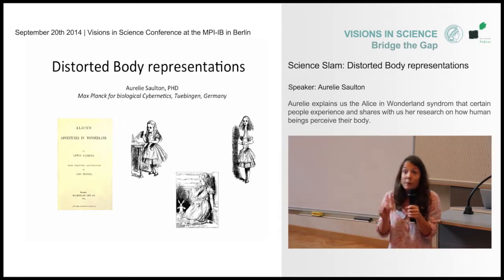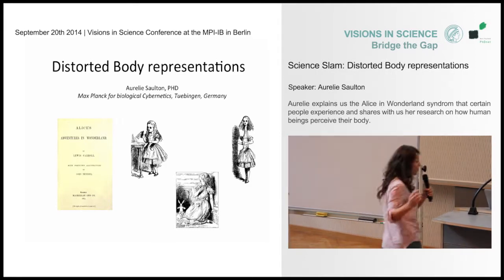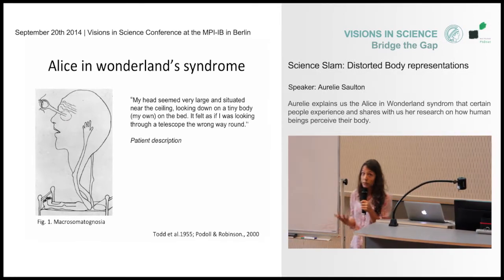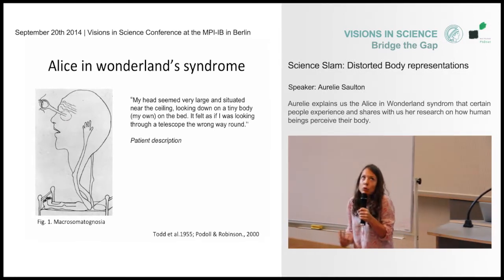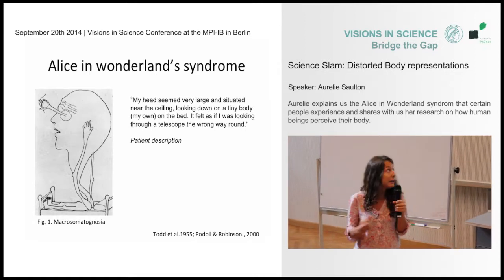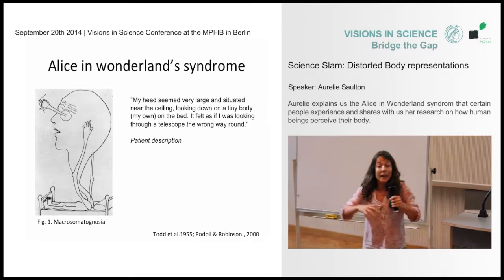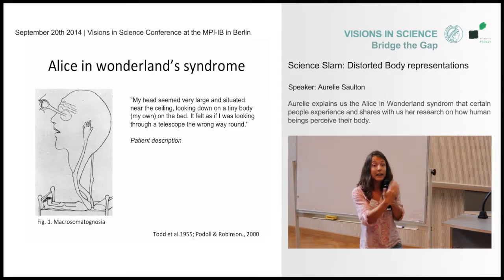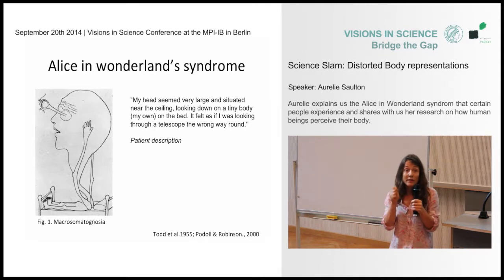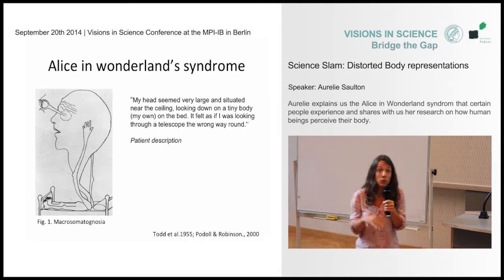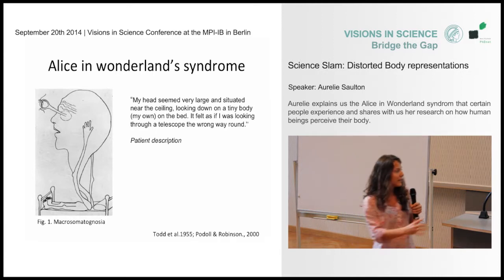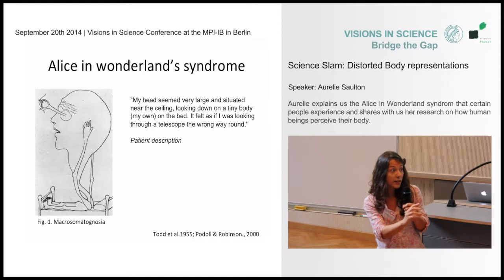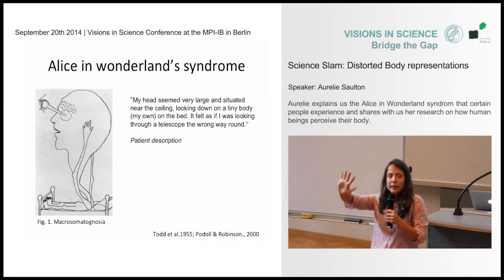That might seem weird to you, but there are people around us who experience exactly similar sensations. Those patients suffer from what we call Alice in Wonderland syndrome — symptoms generally caused by migraines or epilepsy. Those patients can feel like parts of their body are getting really big or really small, exactly like Alice, and that has dramatic consequences on the way they perceive the world. For instance, they can see objects that appear much bigger or smaller than they actually are.